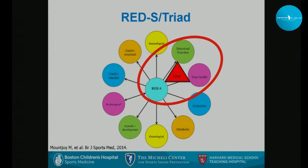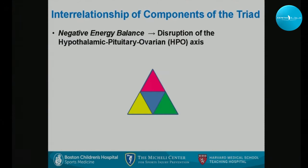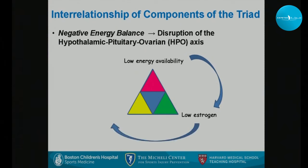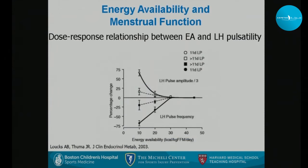Going through the different aspects of REDS — starting with the triad — the initial idea was that negative energy balance leads to disruption of the hypothalamic-pituitary-ovarian axis, which causes a decrease in estrogen, which causes a decrease in bone mineral density. However, it's not that simple.